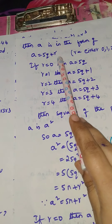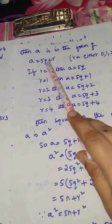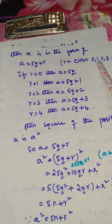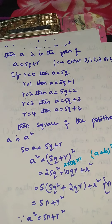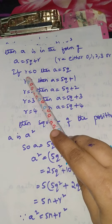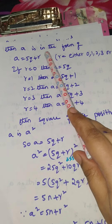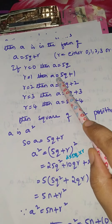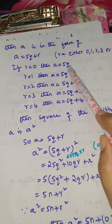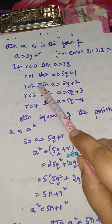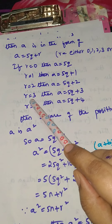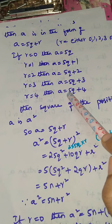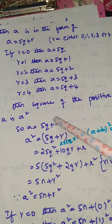Since b is 5, a is in the form 5q plus r. Here r can take values 0, 1, 2, 3, or 4. So: if r = 0, a = 5q; if r = 1, a = 5q + 1; if r = 2, a = 5q + 2; if r = 3, a = 5q + 3; if r = 4, a = 5q + 4.